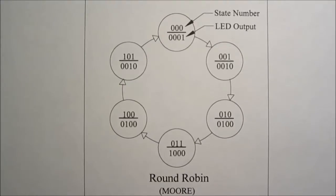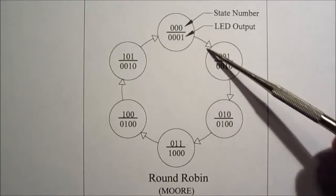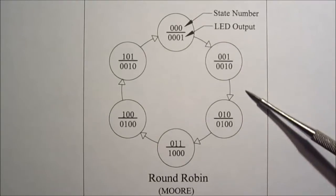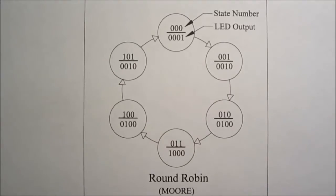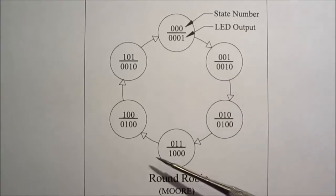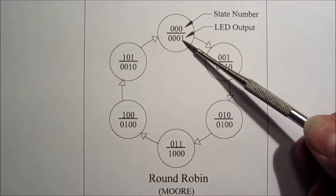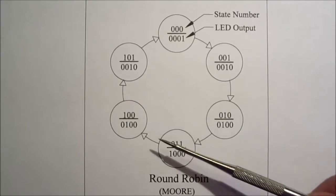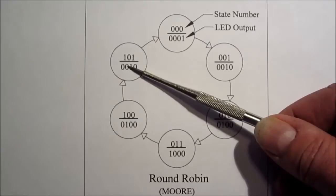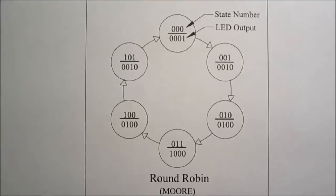We're going to approach this as a state-oriented design. One way to solve this problem is with a state machine called a round robin, which simply transitions from one state to the next without any real decision-making process. All of our desired behavior comes from stepping through these states. We would need six states: first LED on, second LED on, third LED on, fourth LED on, then third LED on, second LED on, and back to the first. So to ping-pong back and forth between four LEDs, we need six states.